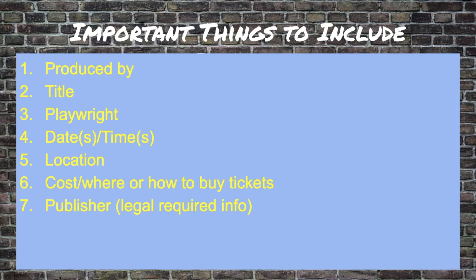Include where it's going to be performed — don't just put 'Lakeview Centennial High School'; put 'Lakeview Centennial High School Auditorium.' Be very specific about the room, especially if you have multiple performance locations. Also include cost and where or how to buy tickets. Lastly, include publisher and other legally required information. Your publisher will send you details about what needs to appear on any advertisement, which could include the composer if it's a musical, or the publisher itself somewhere on your promotional materials.